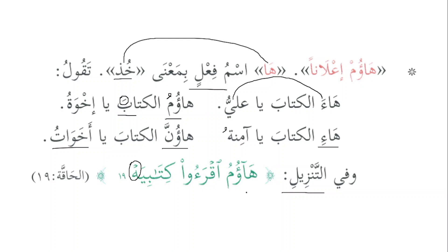If there are two dots on a word, it is ta al-marbootah used for feminine. But in 'kitabiyah,' the person is saying 'my book' and ha has been added — it is similar to ta al-marbootah. Ta al-marbootah always takes fatah before it, so fatah has been added. The translation is 'my book,' but the ya and ha are extra additions.